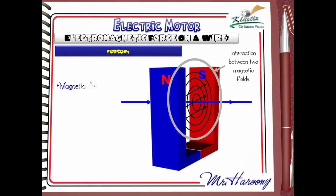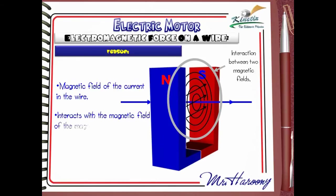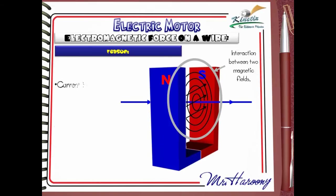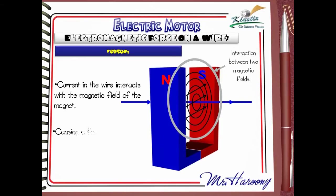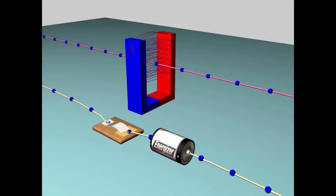So we can explain the force on the wire as follows: the magnetic field of the current in the wire interacts with the magnetic field of the magnet, causing a force on the wire. Another suitable explanation is to say directly that the current in the wire interacts with the magnetic field of the magnet, causing a force on the wire. Now the question is: can we predict the direction in which the wire will be pushed?